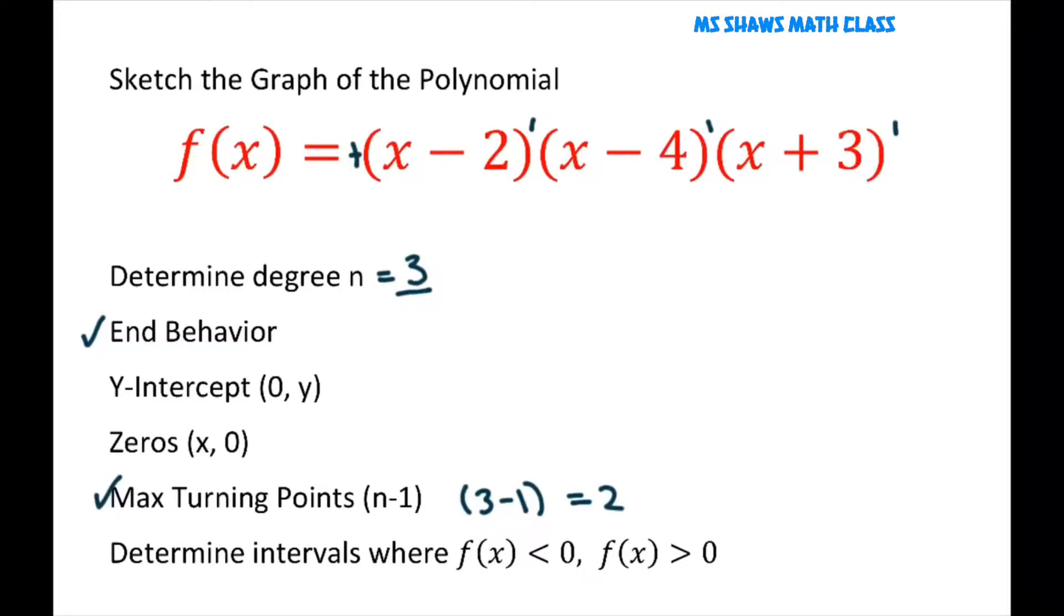Our y-intercept, that is when x is 0. So if you plug in 0, you're going to get negative 2 times negative 4 times 3. So that equals 24. So 0, 24 for the y-intercept.